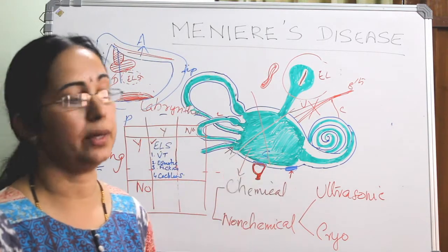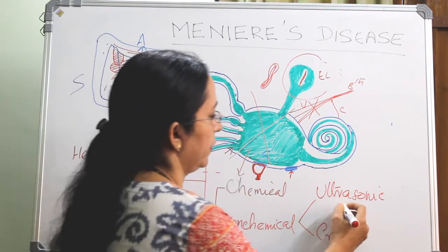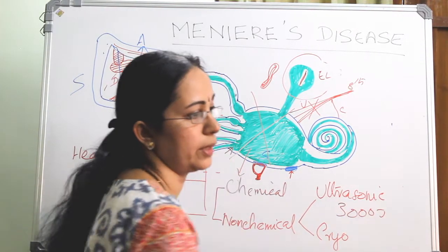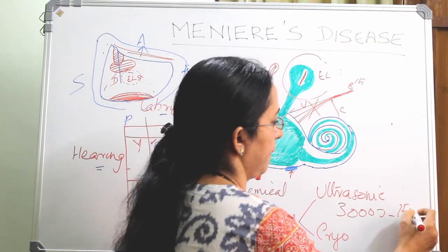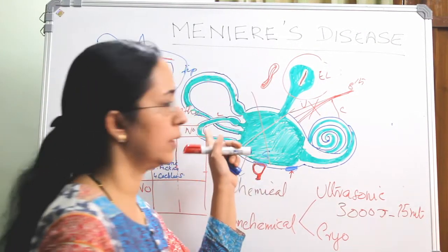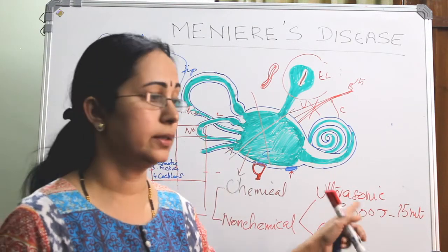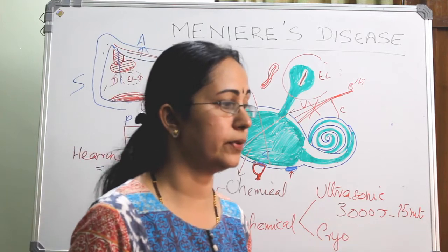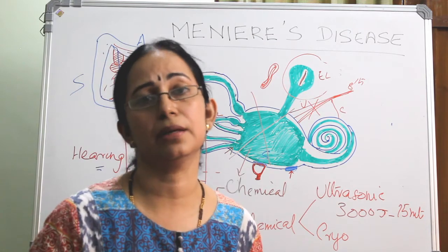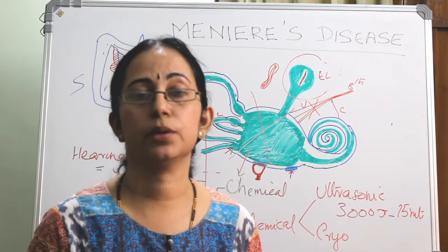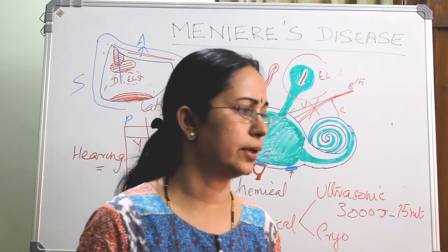These are the three methods by which we apply ultrasonic waves for ablating the vestibular end organ. A total of 3000 joules of current is applied over 15 minutes in all cases, whatever the access. These 15 minutes are given as 3 rounds of 5 minutes each.